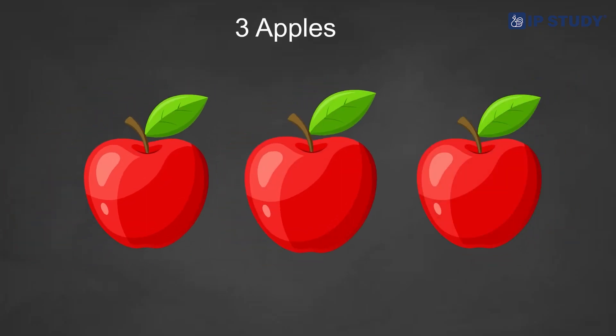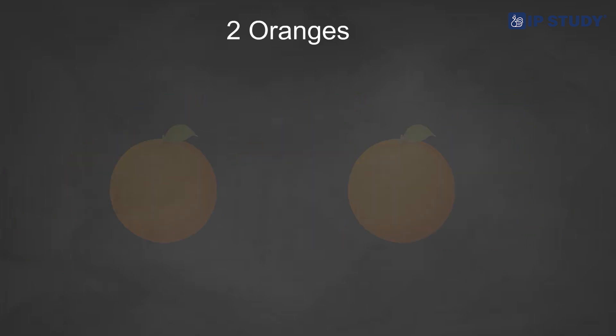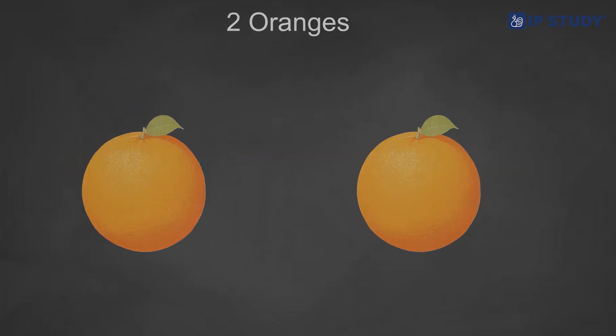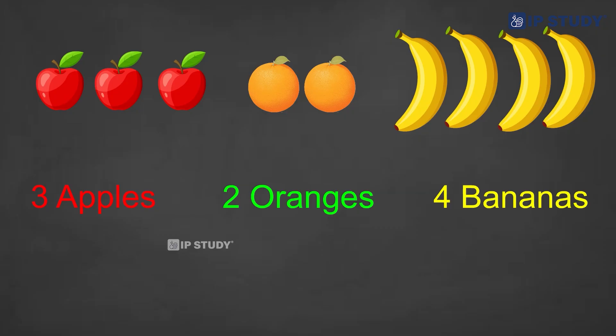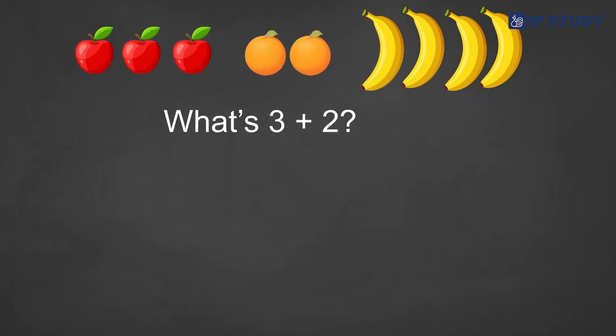Let's solve a fun problem with three numbers. You have three apples, you get two oranges, you find four bananas. How many fruits do you have? Let's add them: three apples plus two oranges plus four bananas. What's three plus two? Yes, five. And five plus four? Right, nine. You have nine fruits.